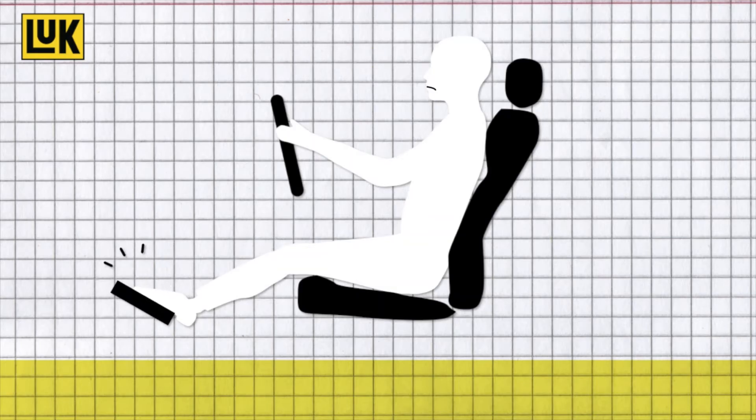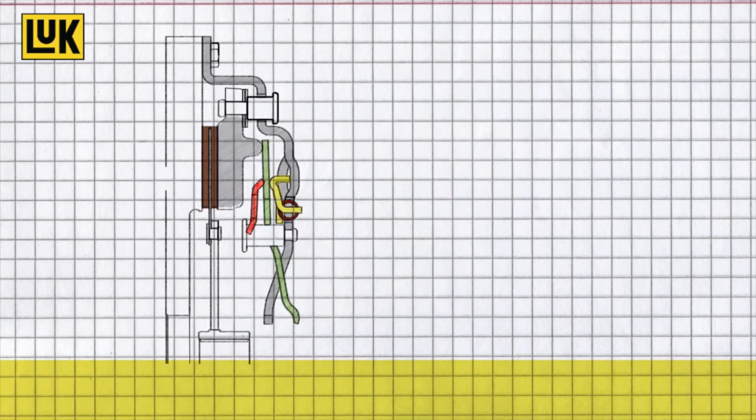Thinner clutch lining results in increased actuation force. To compensate for this effect, LUKE developed the self-adjusting clutch, SAC.